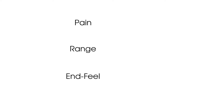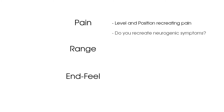When performing palpation, assess pain, range, and end feel at each spinal segment. For pain, note at which level you recreated your patient's pain and whether this was via the central PA, right unilateral PA, or left unilateral PA. It is also very important in the context of a neurological examination to see whether palpation recreates neurogenic symptoms in the legs — for example, a right unilateral PA at L5 reproducing leg pain suggests the L5 segment is likely sensitised and may be the source of leg symptoms.